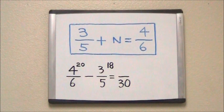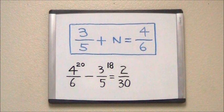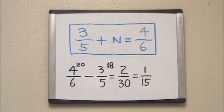We then subtract 18 from 20 to get 2 and we're left with 2 thirtieths. Finally, 2 thirtieths can be reduced to 1 fifteenth. Therefore, our final answer is N equals 1 fifteenth.